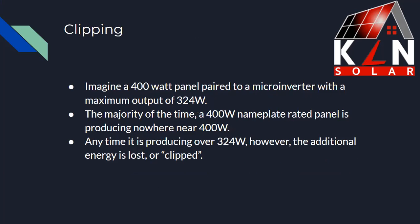So what is clipping? Imagine you have a 400-watt panel. The microinverter most commonly picked for it has a maximum output of 324 watts. The majority of the time, this 400-watt nameplate-rated panel is not producing anywhere close to 400 watts. But if at any point it's producing more than 324 watts — which is very possible and even likely on a south-facing panel in a southern state with good sun intensity — that additional energy, anything over the rating of the microinverter, is lost, or we call it clipped.